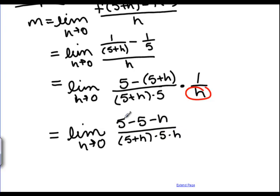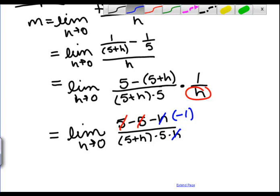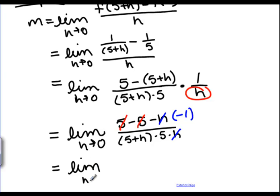The bottom is 5 plus h times 5 times h. And I notice right away that I can cancel the 5's on top. That leaves me with a minus h. So now I have minus h on top and 5 plus h times 5 times h on the bottom. So I cancel the h's. And I'm left with a minus 1 on top. Minus h, when you cancel the h, it becomes minus 1. And my new limit is the limit as h goes to 0 minus 1 over 5 plus h times 5.